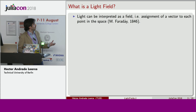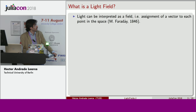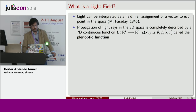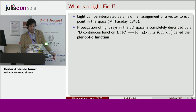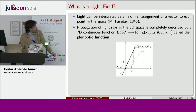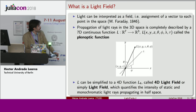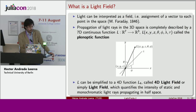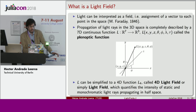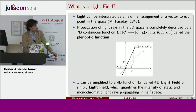First of all, I want to present what LightFields are. Light can be represented as a field — an assignment of a vector to each point in space — as proposed by Michael Faraday. The propagation of light rays in 3D space is completely described by a seven-dimensional function called the plenoptic function. This function describes the amount of light traveling at a point with coordinates x, y, z and directions with angles theta and phi, and wavelength lambda and period tau. Describing a seven-dimensional function is quite complex, so one can reduce the complexity and simplify this plenoptic function into a four-dimensional function called the 4D LightField, which quantifies the intensity of static monochromatic light rays propagating in half-space.